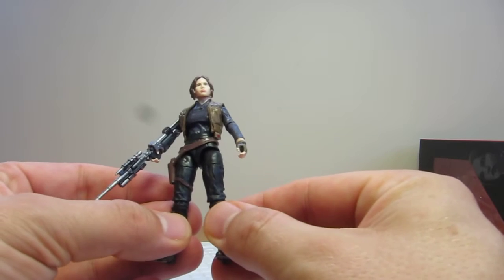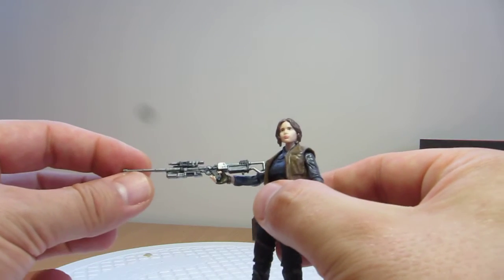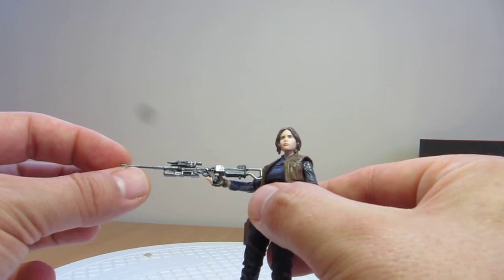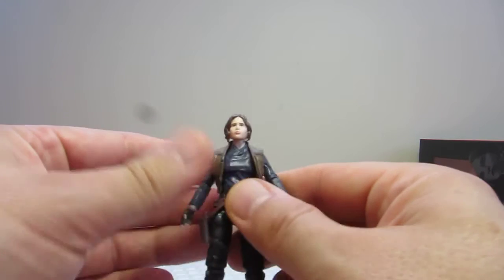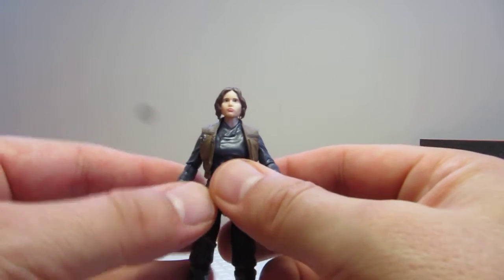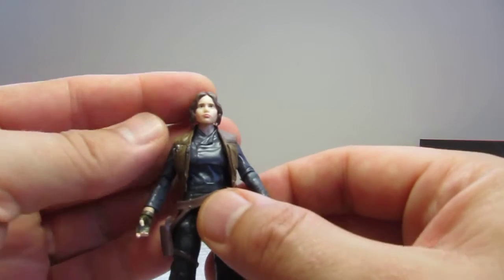So this teeny tiny figure is cool. It's nice to get Jyn in a 3.75 inch articulated scale and she comes with this ridiculously big blaster. Beautifully done blaster I have to say, we'll talk about that more in just a second. The figure itself, I think they've pretty much nailed the likeness of Jyn. It's a little hard to get in focus since she's so small.